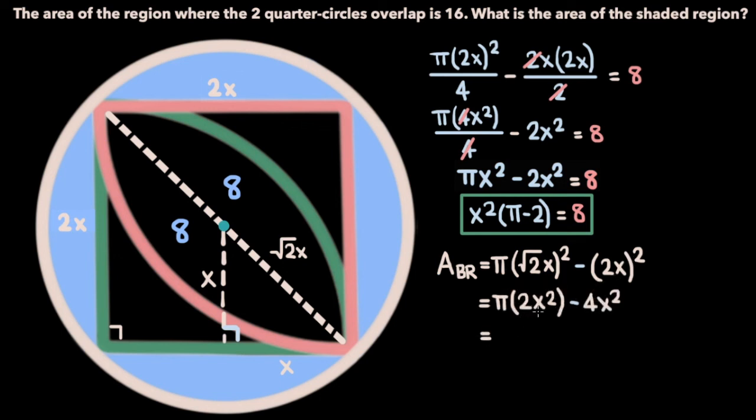And this time we can factor out a 2x² from both terms, so if we do that we get 2x²(π - 2). Recall that we figured out that x²(π - 2) is equal to 8, so if we substitute 8 in for the underlined expression, we get that the area of the blue shaded region is 2 times 8, which is 16.